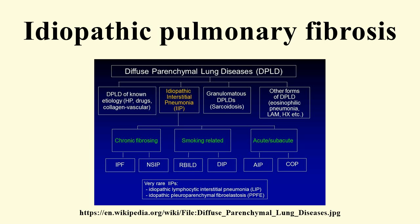The 2002 American Thoracic Society and European Respiratory Society classification of idiopathic interstitial pneumonias was updated in 2013. In this new classification there are three main categories: major IIPs, rare IIPs, and unclassifiable IIPs.